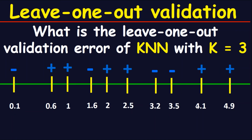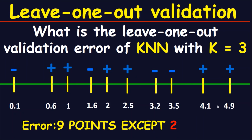For the next point, the closest three points include 4.1 — we have two negative signs and only one positive sign. The majority of signs is negative but the original point is positive, so this point is an error. For the last point, the closest three points give one positive sign and two negative signs, so again this point is an error.